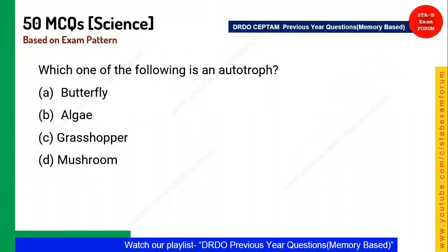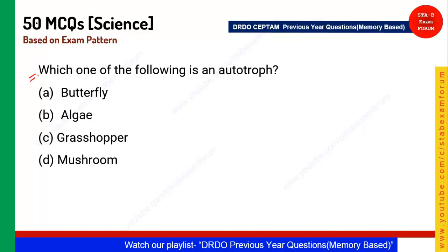Next question: Which of the following is an autotroph? Autotrophs are living beings that make their own food. Algae make their own food and are autotrophs. Butterflies and mushrooms depend on other organisms — they are called heterotrophs.